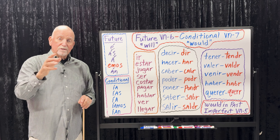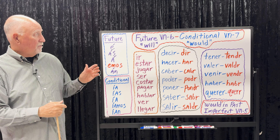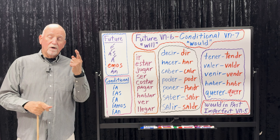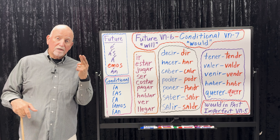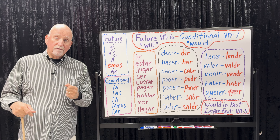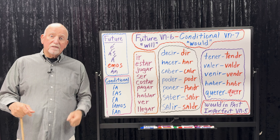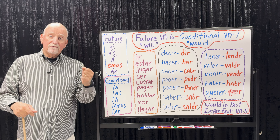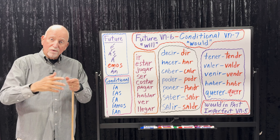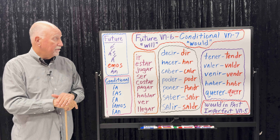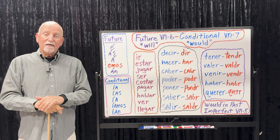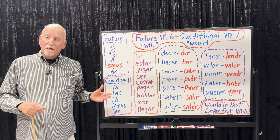Alright — that's the future and the conditional, verb numbers six and seven. We've done zero through seven: the infinitive, present participle, past participle, present tense, preterite, imperfect, future, and conditional. All that's left are the present and past subjunctive — verb numbers eight and nine. To form them, we're going to use conjugations we already know, so essentially you already know how to form them. We'll learn how to use them correctly and practice constructing sentences at the highest level. I'm feeling good — we've got eight of ten verb forms done!